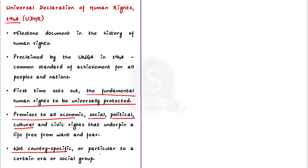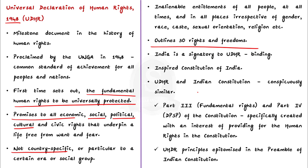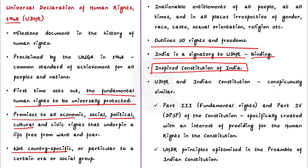UDHR outlines about 30 rights and freedoms that belong to all of us and that nobody can take away from us. Note that India is a signatory to the United Nations Declaration on Human Rights, so it is binding upon India. The rights under it continue to form the basis of international human rights law. It has inspired many documents across the world, including our constitution, which was being drafted at the same time as the declaration was adopted in 1948. UDHR has a profound impact on the constitution and the two are very similar.